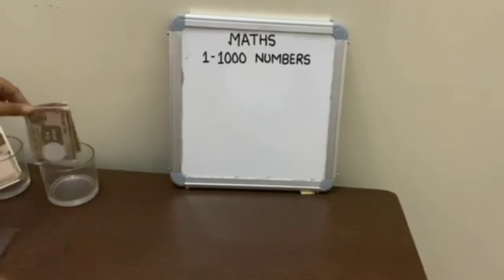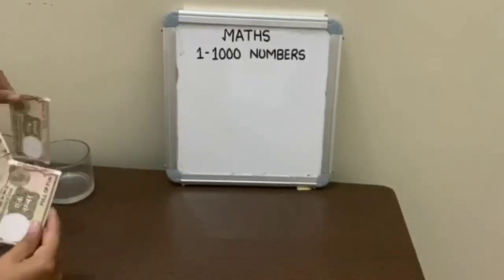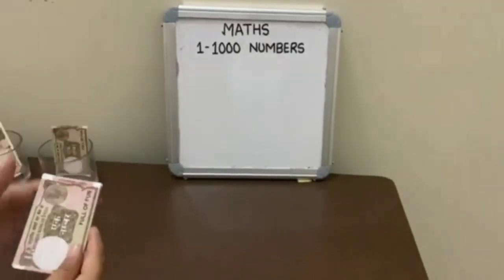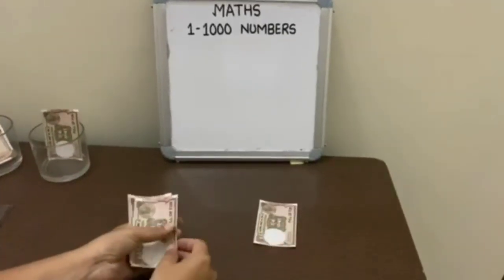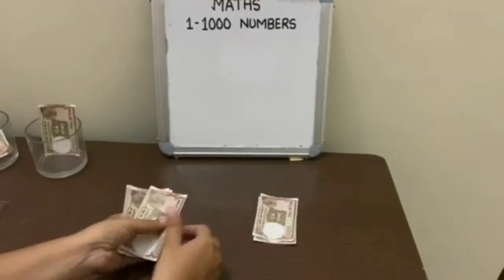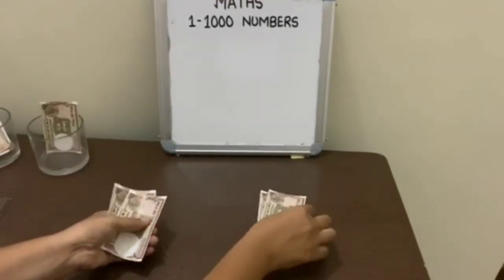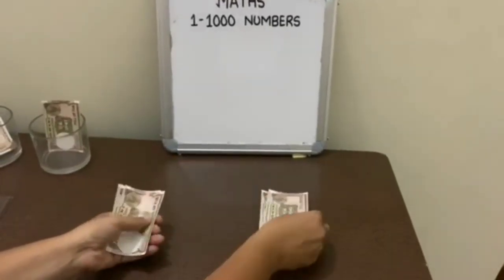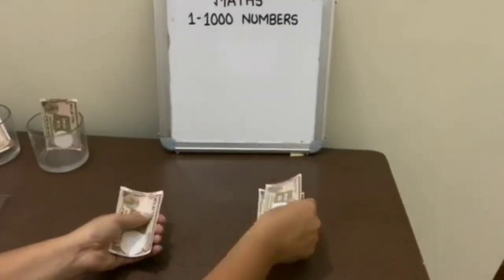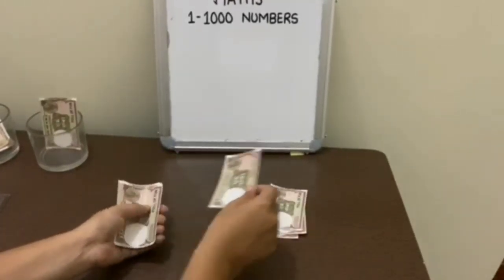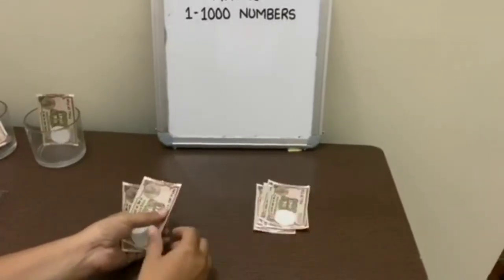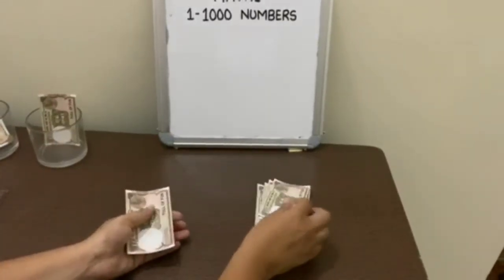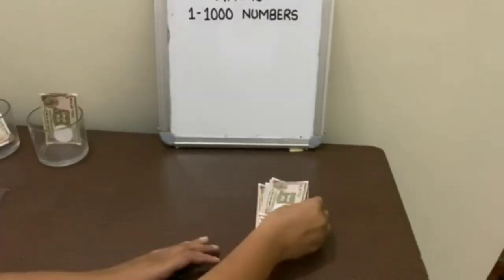Now let's take some currency notes and count them: 1, 2, 3, 4, 5, 6, 7, 8 and 9. These are 9 one-rupee notes.